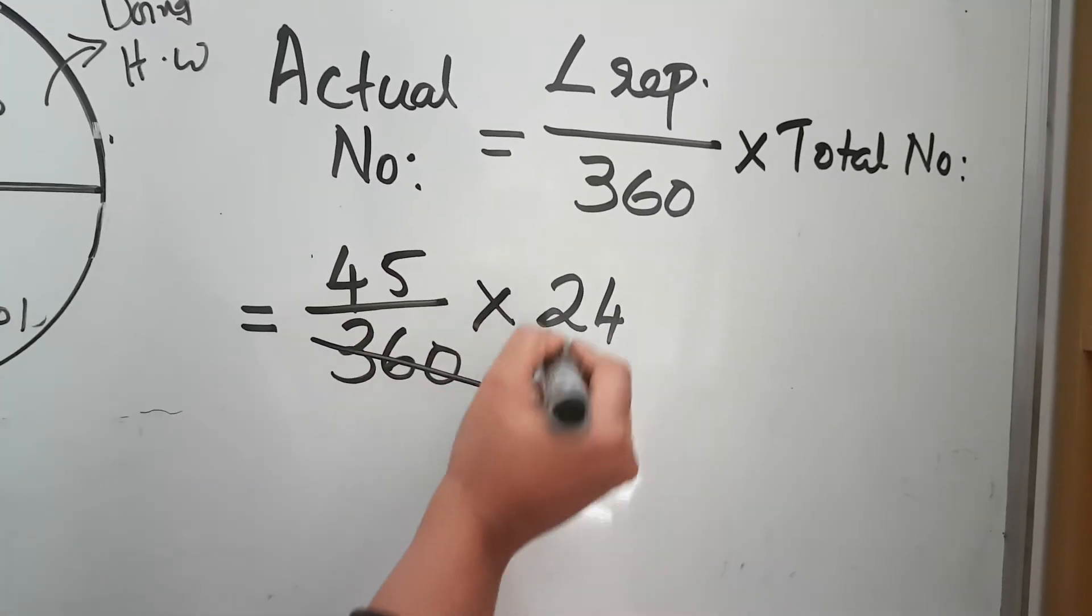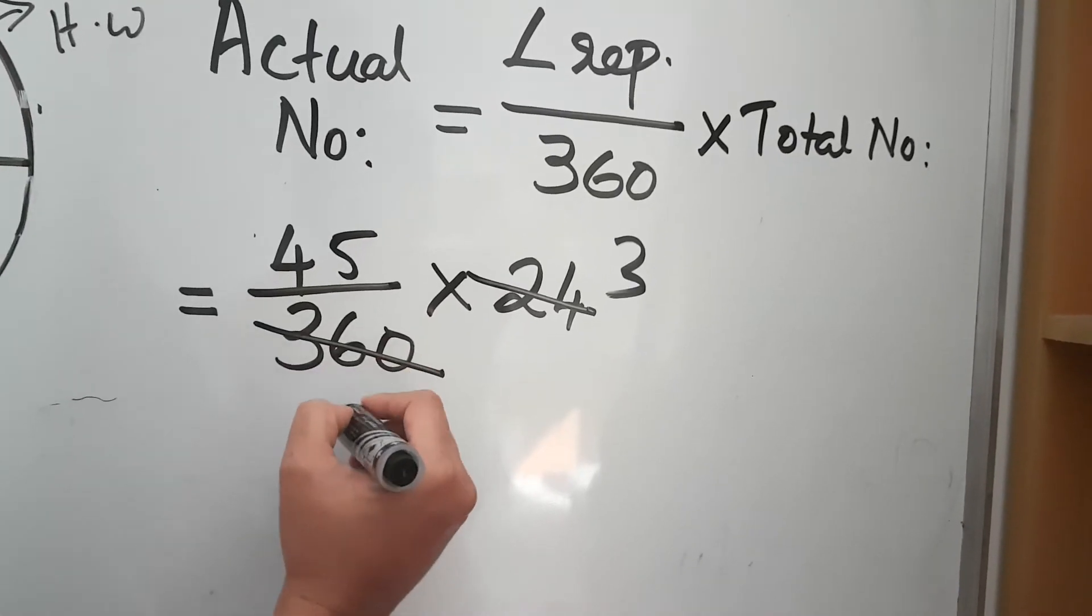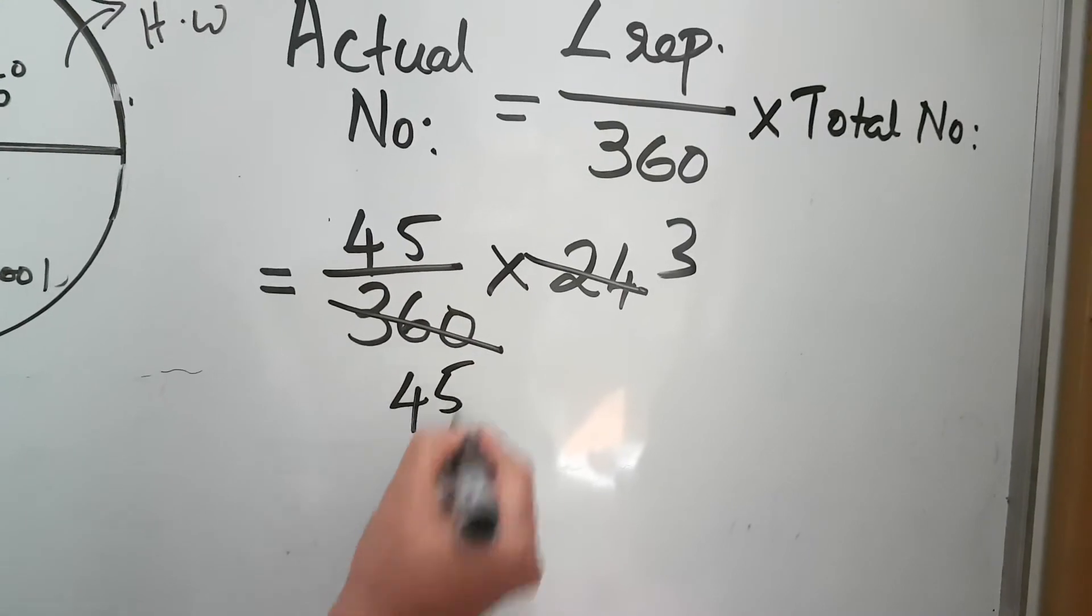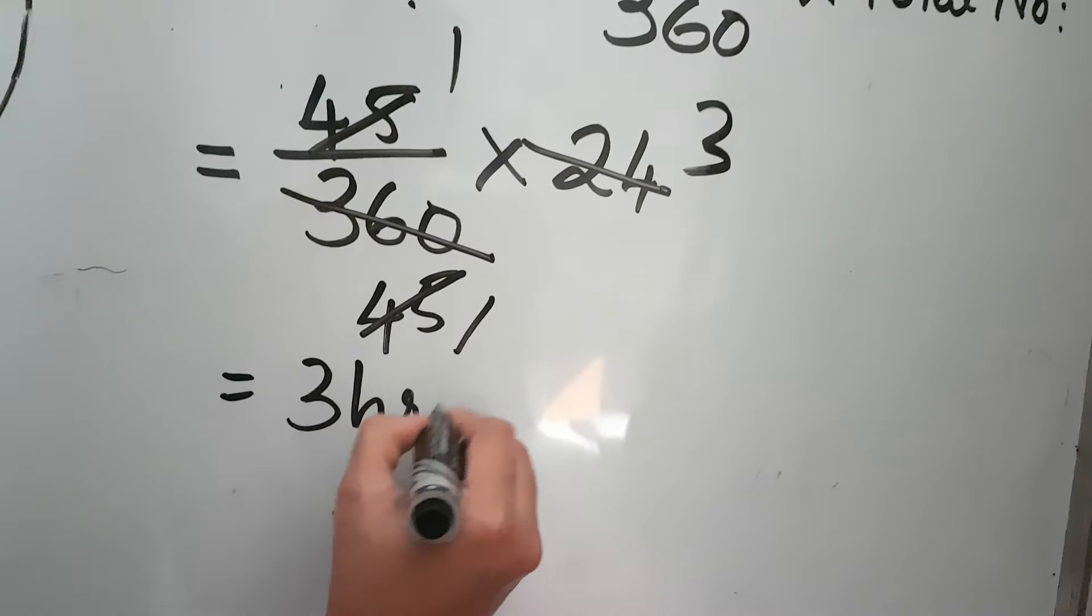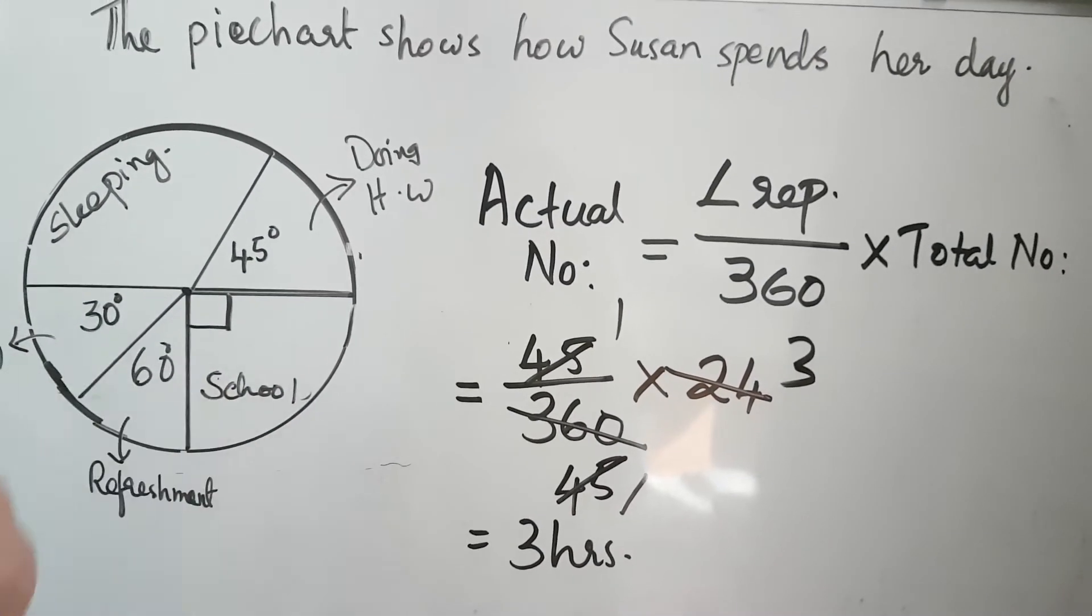Now when you cancel it, you can cancel by 8. Three 8s are 24, and 8 fours are 32. After cancellation, I get 3 hours. She spends 3 hours doing her homework.